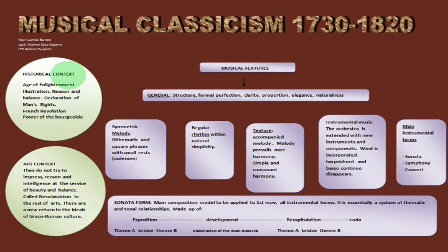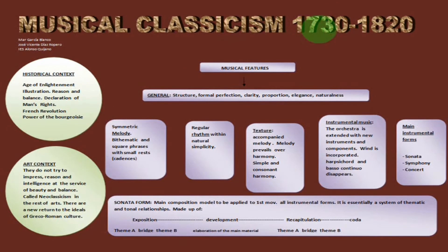Hello everybody, welcome again to a new unit of music. This unit is called Musical Classicism, a period which took place between the 18th and the 19th centuries, 1730 till 1820 more or less.